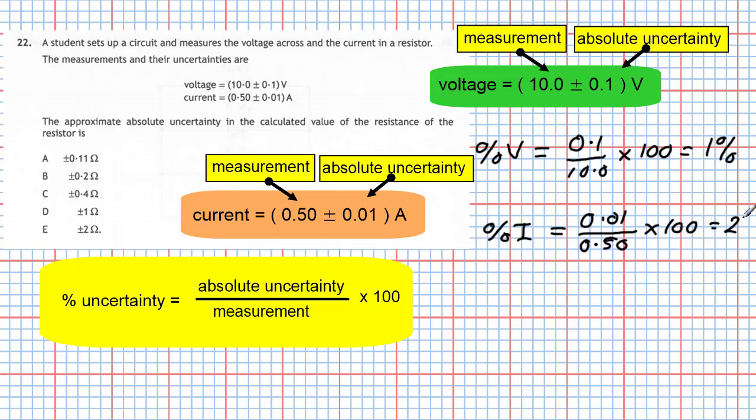That gives two percent. So the percentage uncertainty in the current is two percent, which is double the percentage uncertainty in the voltage. So I'm going to use the percentage uncertainty linked to the current for the whole experiment, as it is the larger of the two.